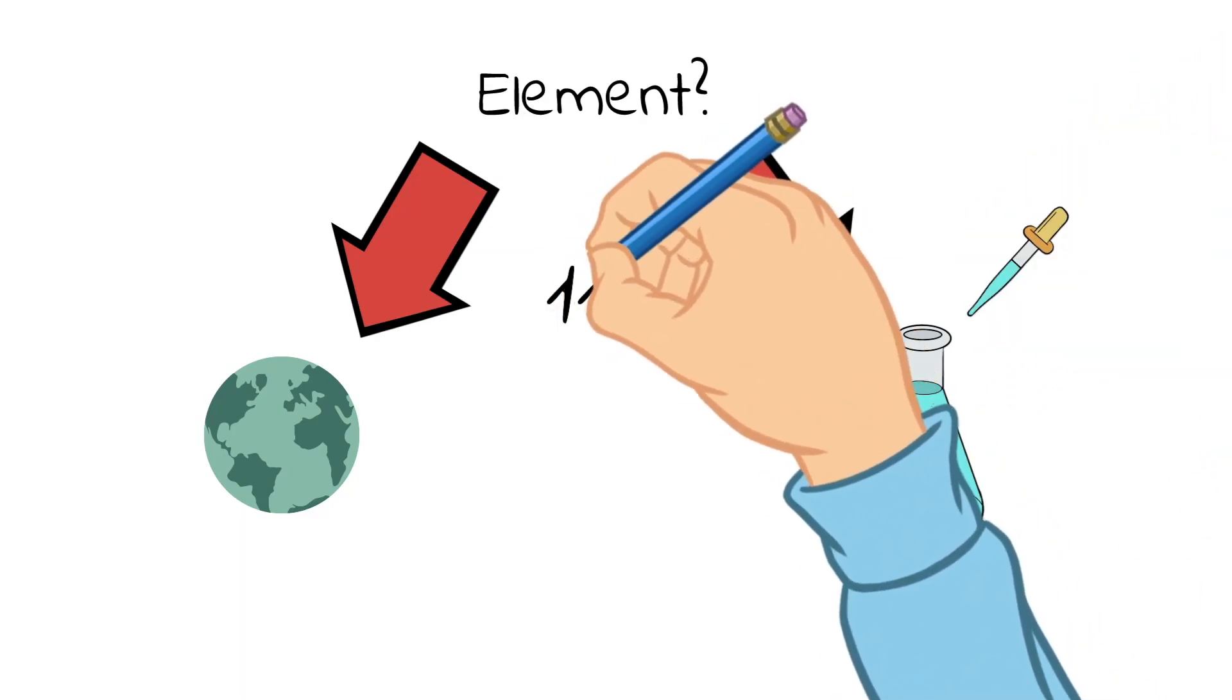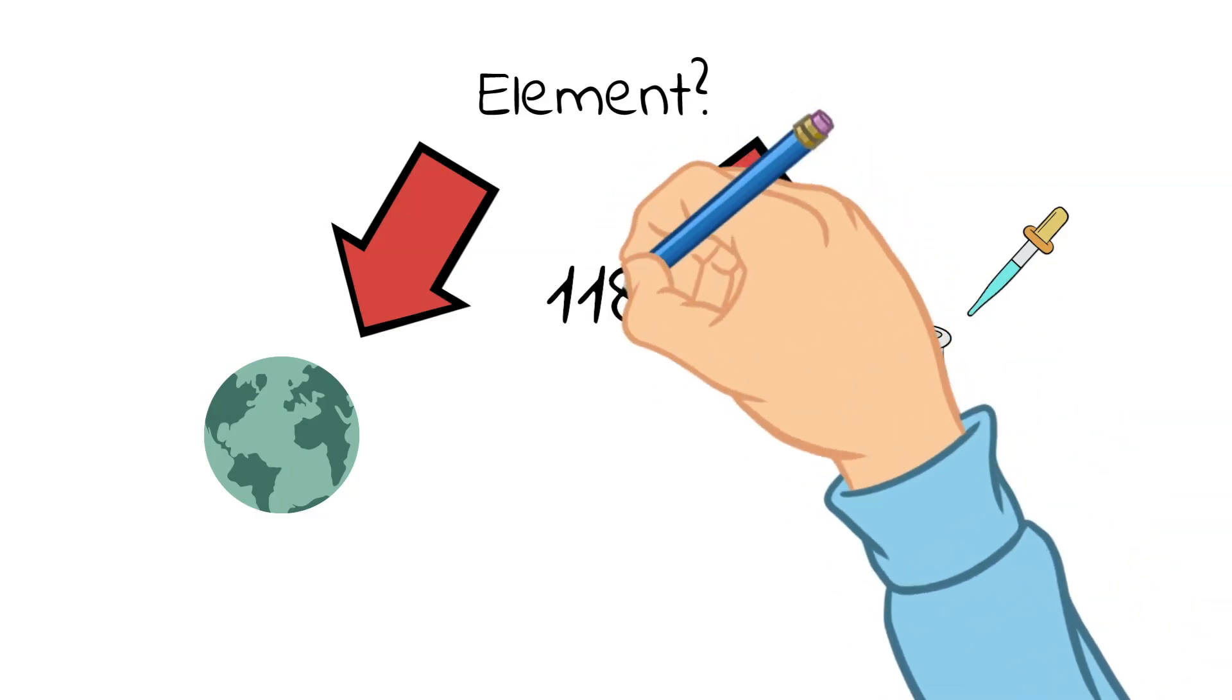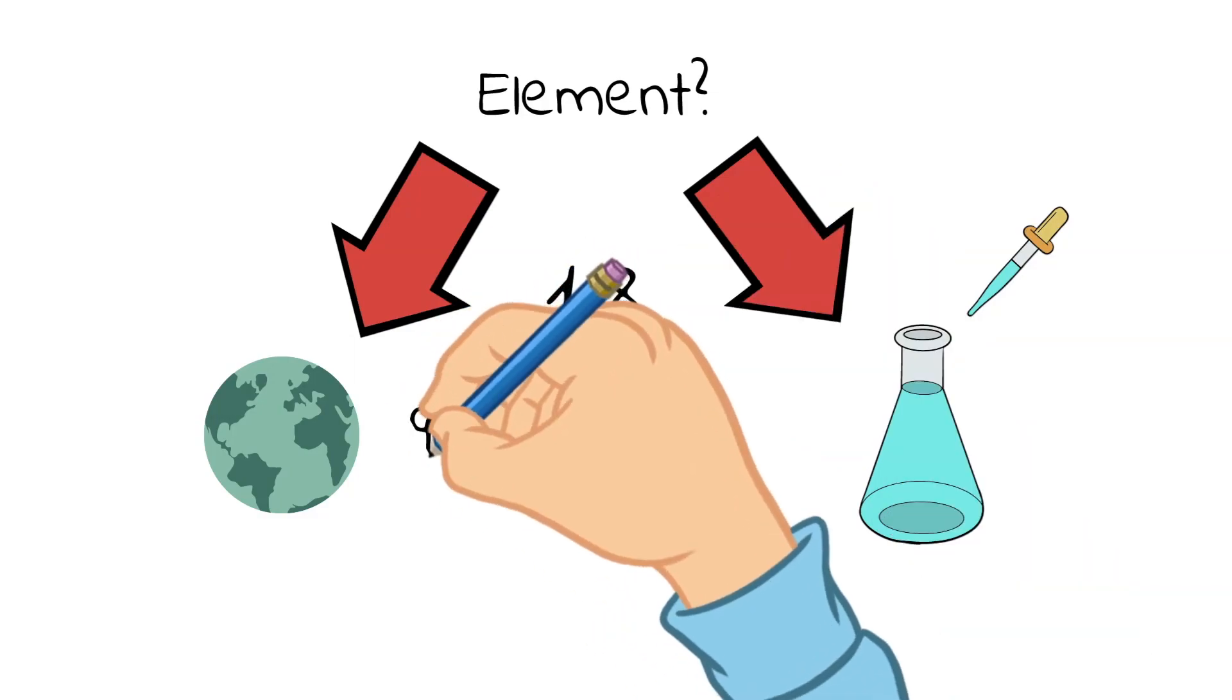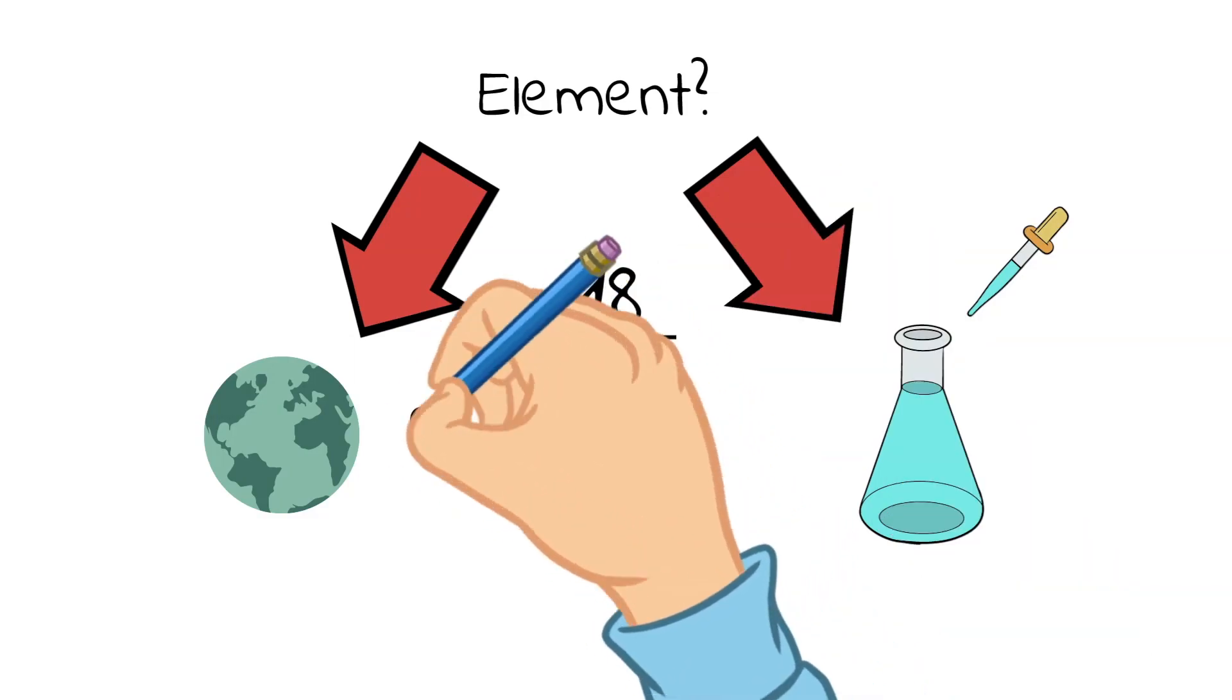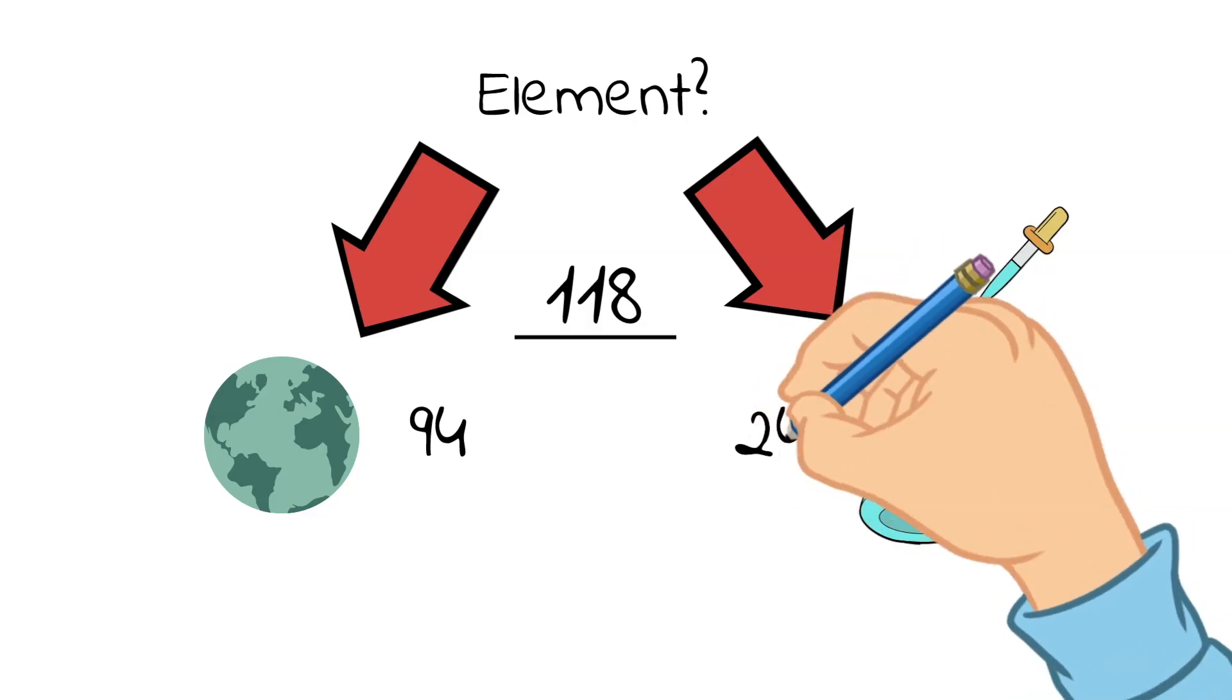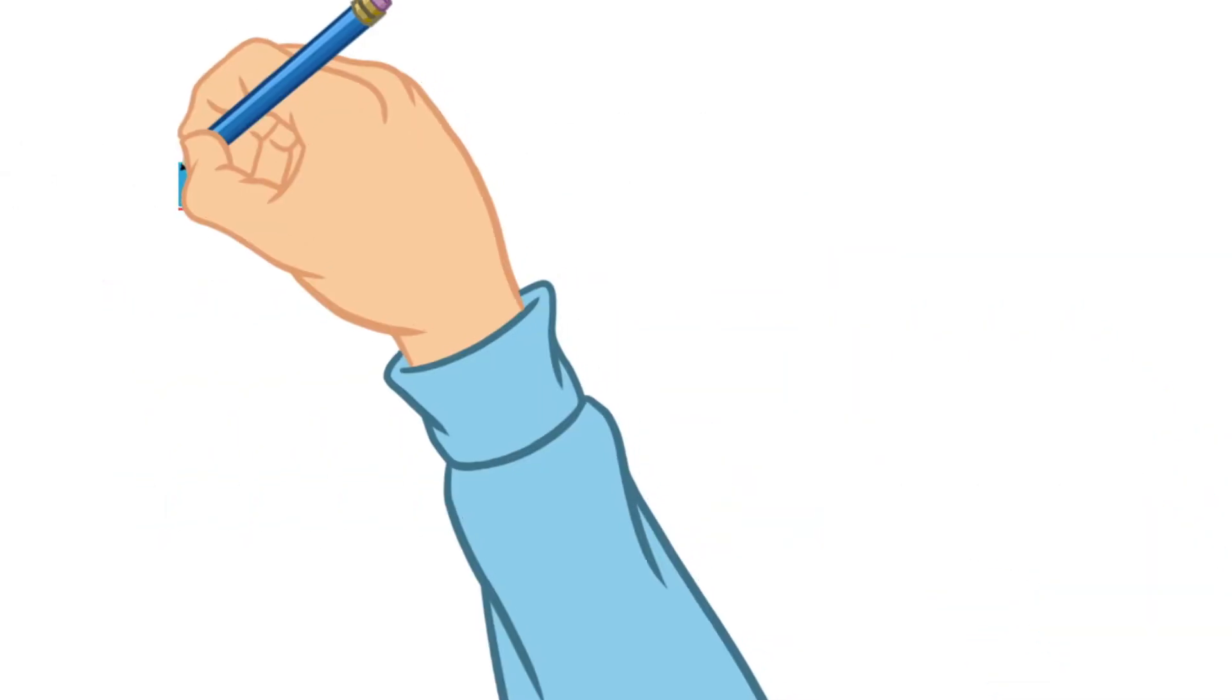It is currently understood that there are 118 total elements, of which 94 are naturally occurring on earth, and 24 elements are produced in a laboratory.